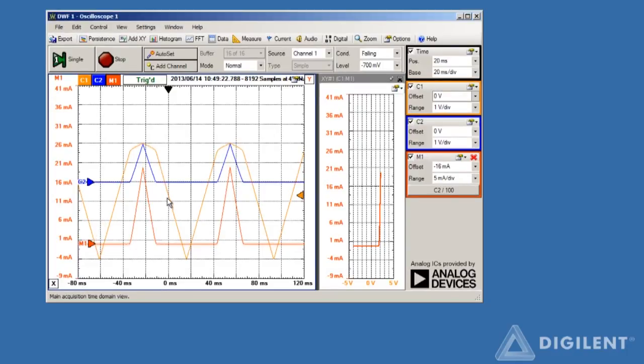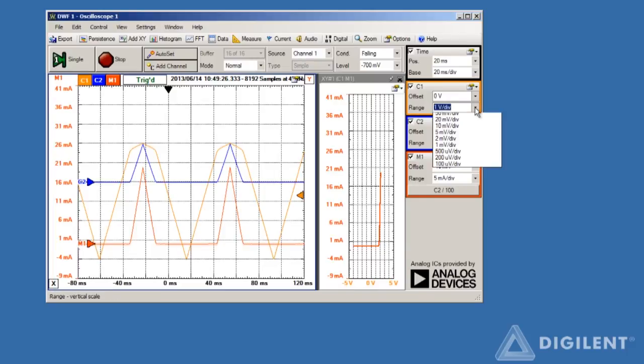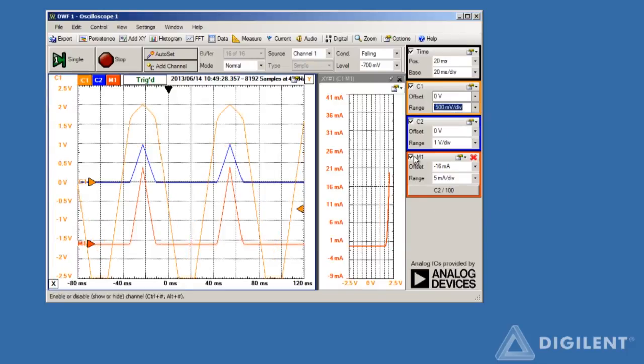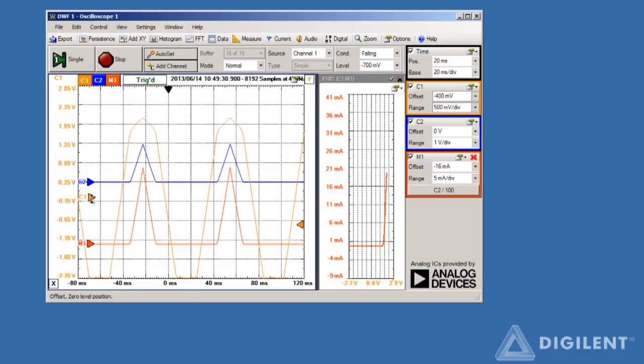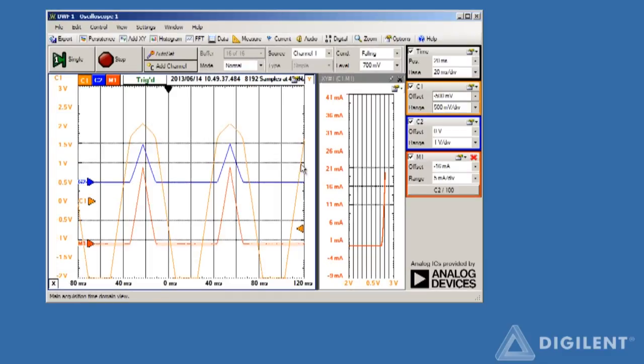We can also adjust the scale on channel 1 if we want. The size of the XY window can also be changed by clicking and dragging the border between the main plot window and the XY plot window.